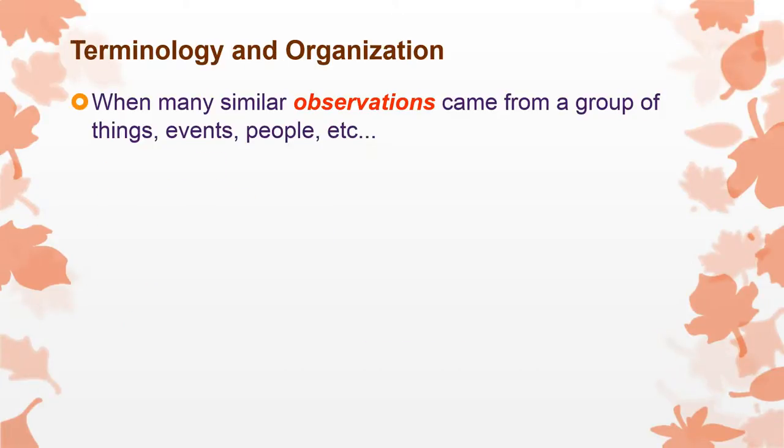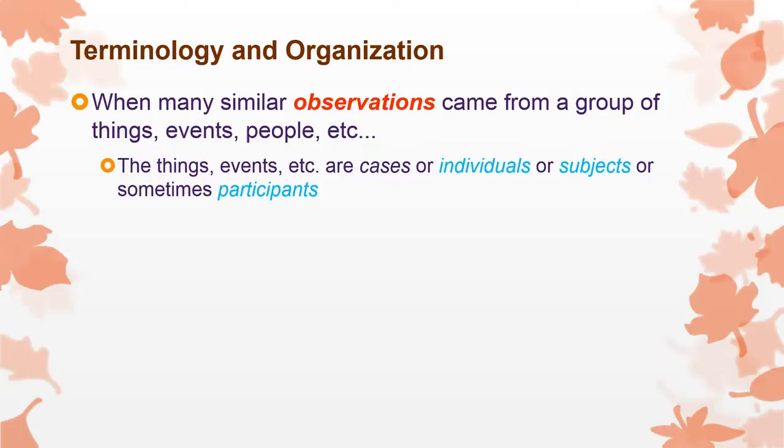So let's talk about some terminology to get things straight here. When we have many similar observations coming from a group of things or events or people or something like that, then the things or events or something that we are looking at, that we are observing or listening to or touching or whatever, we call them cases. Sometimes we call them individuals or the people who came from them we call them individuals or subjects, sometimes abbreviated just with a capital S or SS if its subjects, sometimes participants. Those are all really similar if not identical things.